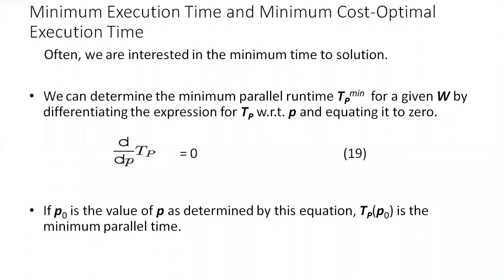We are interested in minimum time to solution. We can determine the minimum parallel runtime tp_min for a given w by differentiating the expression for tp with respect to p and equating it to 0, so d/dp of tp equals 0, as given in equation number 19. Let p0 be the value of the number of processing elements. The value of tp_min can be determined by substituting p0 for p in the expression for tp.